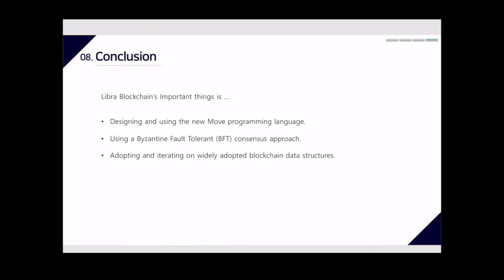In conclusion, the important aspects of the Libra blockchain are: designing and using the new Move programming language, using a Byzantine fault tolerance consensus approach, and iterating on widely adapted blockchain data structures. Technically there is no shocking news, but Libra's association consists of many stable enterprises. Libra is trying to bypass blockchain limitations such as security, scalability, data processing, and storage capacity with a stable federated validator configuration. However, the protocol is still under development, and its future success depends on the stability of Move, the establishment of the validator ecosystem, the performance of the actual consensus implementation, and the breakdown of government regulation.